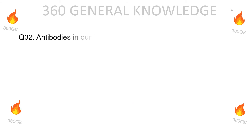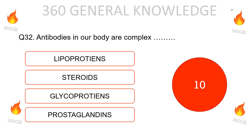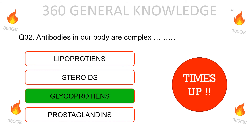Antibodies in our body are complex: lipoproteins, steroids, glycoproteins, or prostaglandins? The correct answer is glycoproteins.